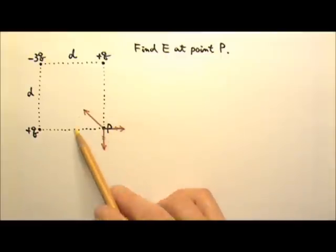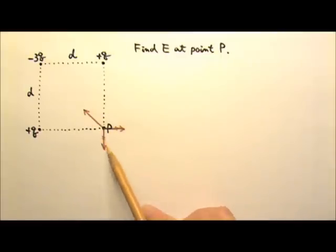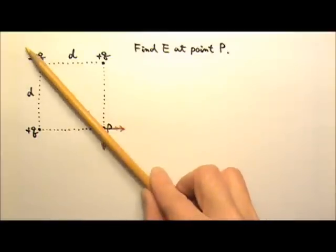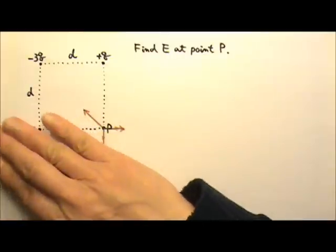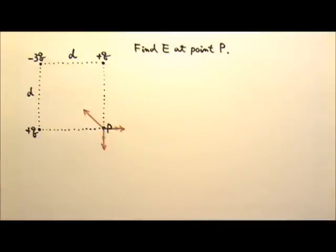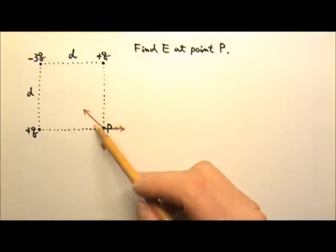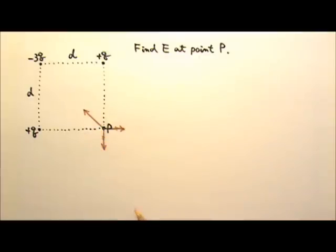To find the net electric field, we have to add those three fields together by adding vectors. In this particular problem, we have symmetry along this diagonal. So we know the net field must be along this direction. It's convenient to add two of the vectors first and then add the third one.